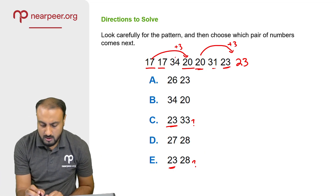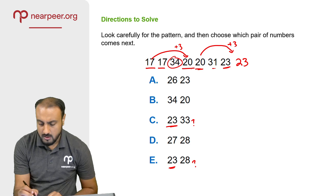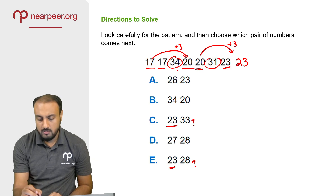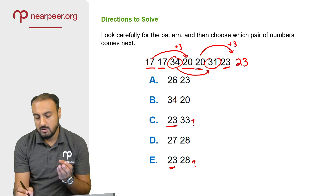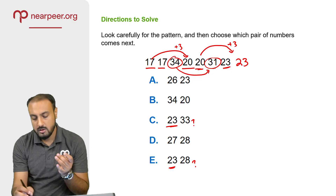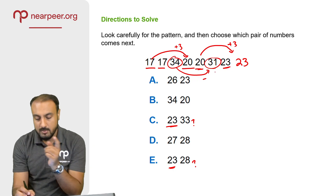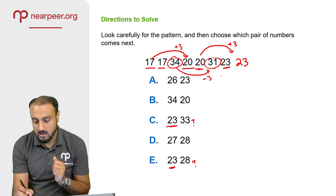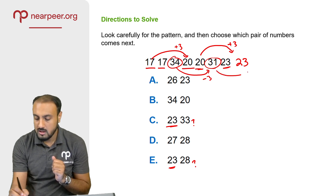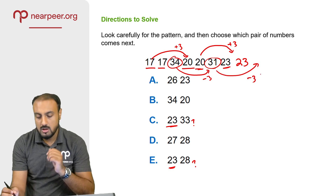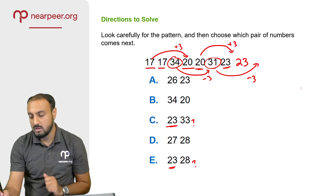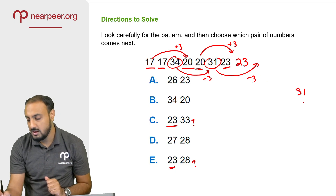Looking at this: 34th and 31 — 34, 31, minus 3. Then 35, 32, 33, 34 — again 34 and 31, minus 3. Then 31: remove 3. So the minus 3 pattern is consistent throughout this series.